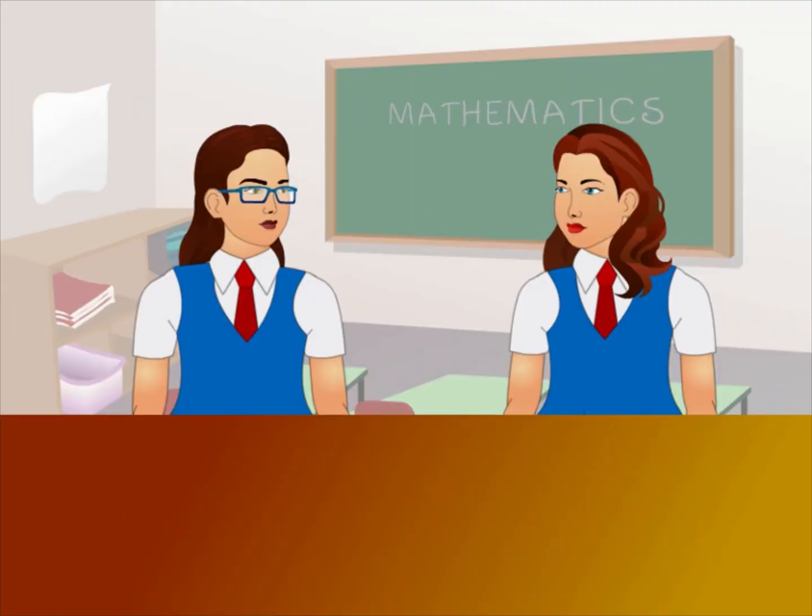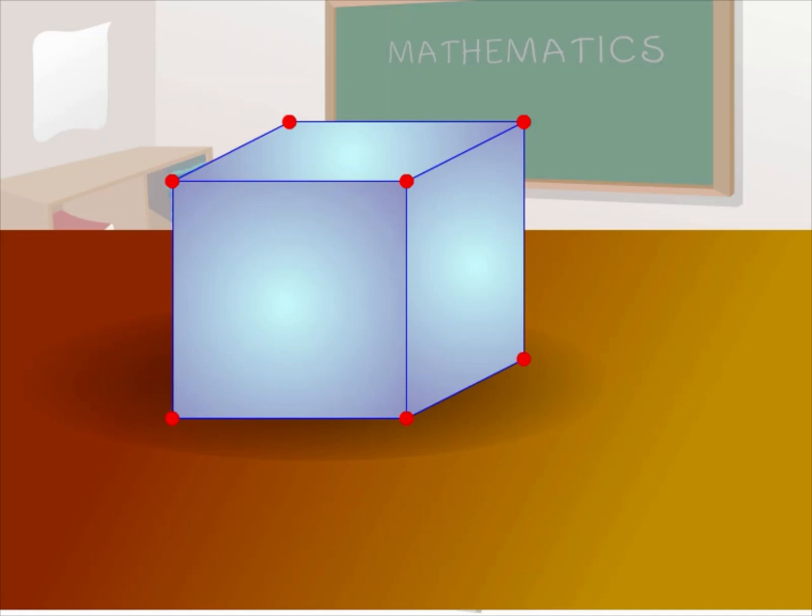Anu and Anju are going to present their work to the classroom. The teacher asks who will present first. Anu volunteers and begins her presentation: This is the cube. This is the length, the breadth, and this is the height. The dimensions of the cube are all the same or of equal size.